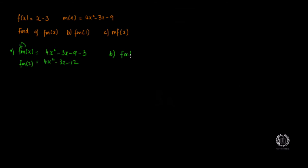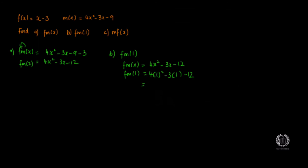For part (b), find f(m(1)). Using f(m(x)) = 4x² − 3x − 12, substitute x = 1: 4(1)² − 3(1) − 12 = 4 − 3 − 12 = 1 − 12 = −11. That is your f(m(1)).